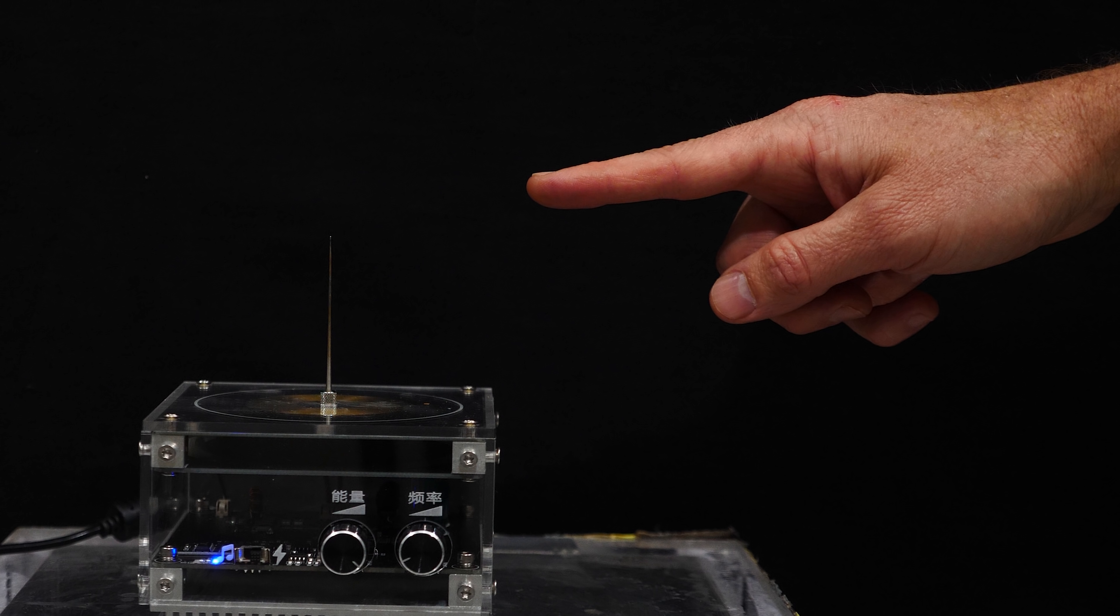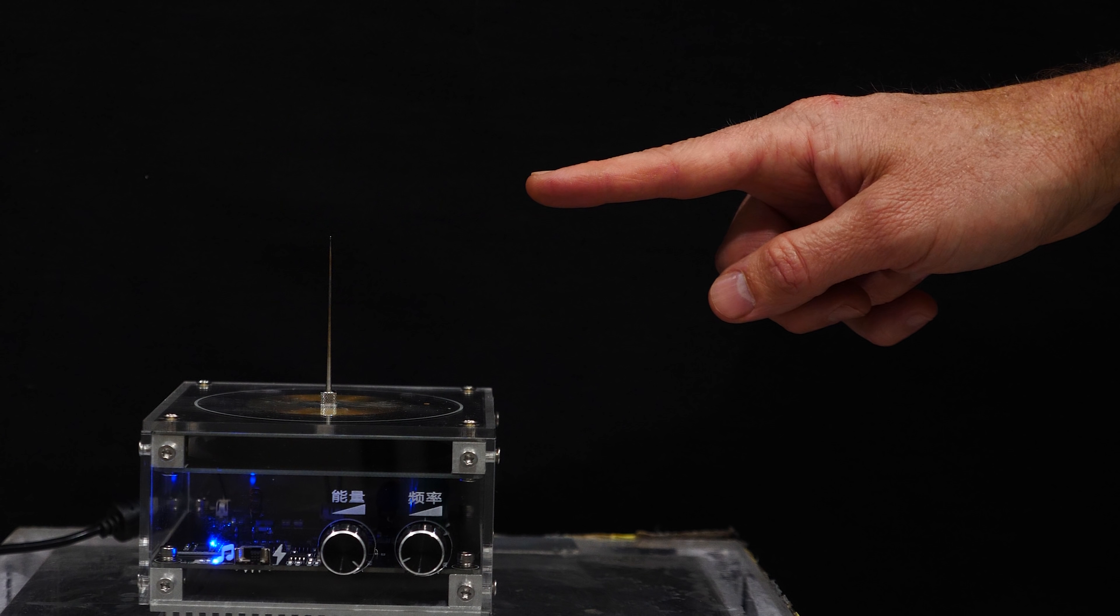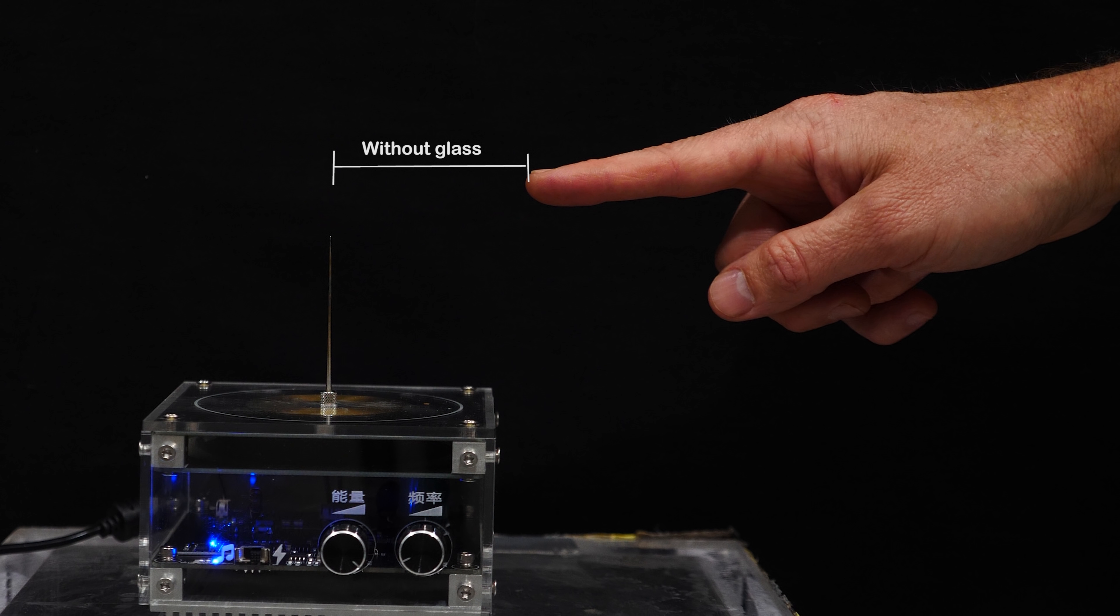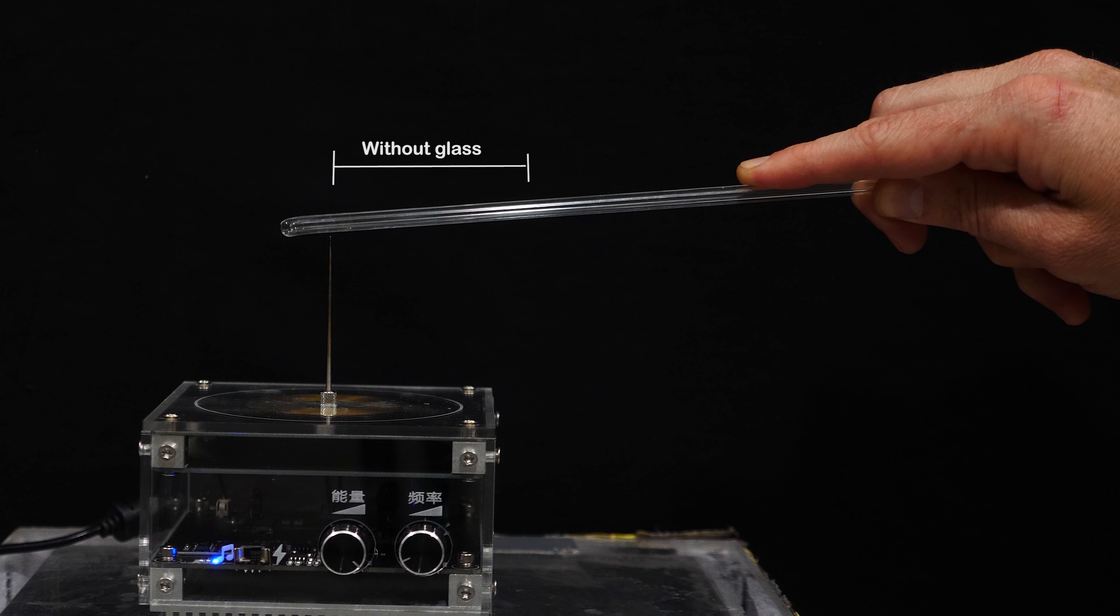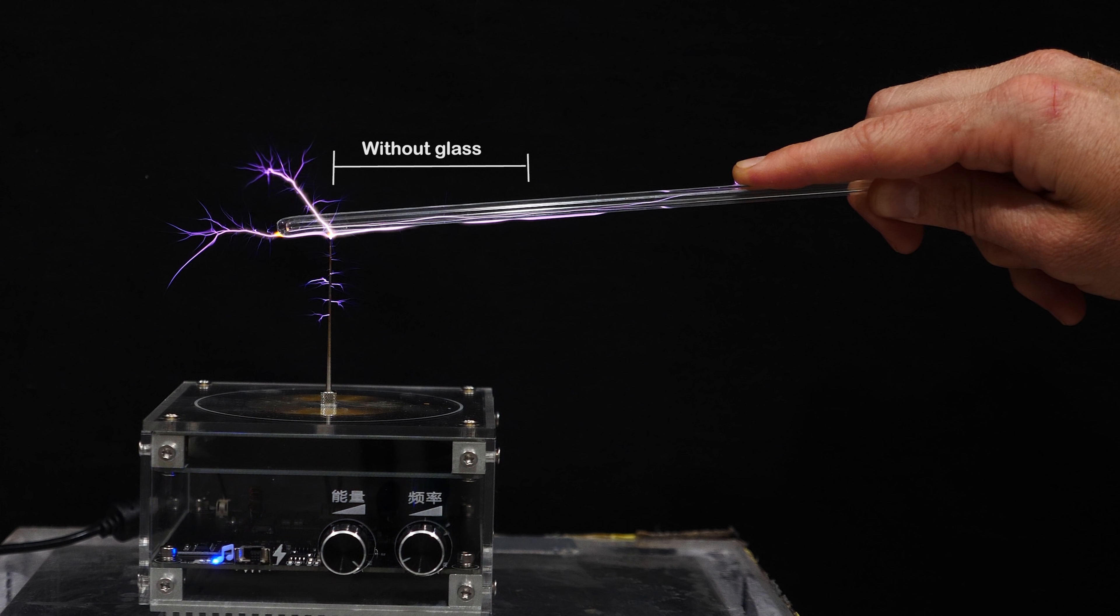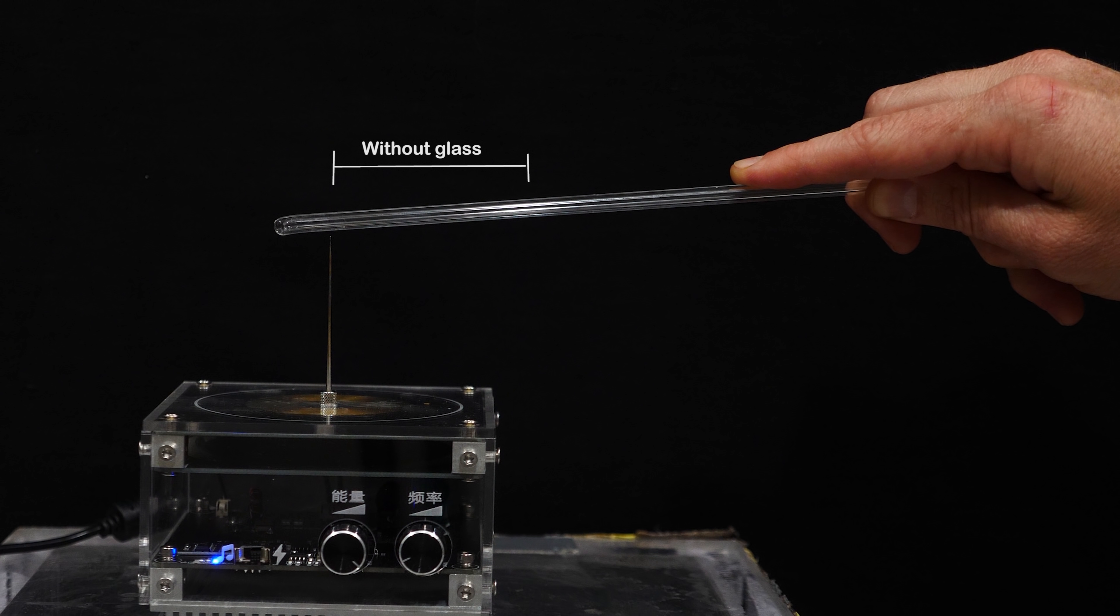But watch what happens when I hold the glass rod near the Tesla coil. So for example, here's how far away I can get while still getting shocked without the glass rod. And here's what it looks like when I have the glass rod in my hand.